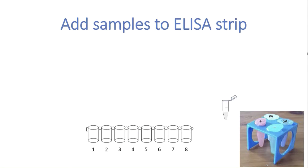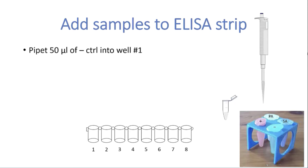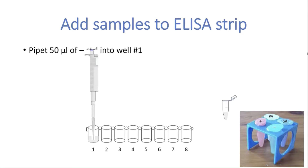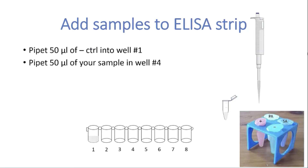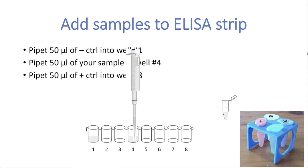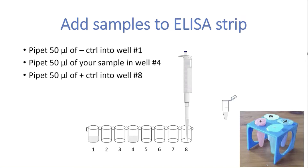Everybody will receive an ELISA strip to complete their analysis. Samples are added to the ELISA strip: 50 µL of the negative control is pipetted into well number 1, then 50 µL of the sample is pipetted into well number 4, and finally 50 µL of the positive control is pipetted into well number 8. The strip is allowed to sit for 5 minutes for binding to complete.